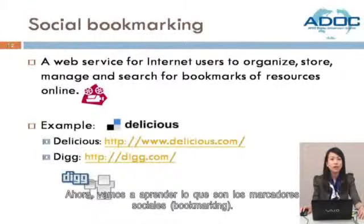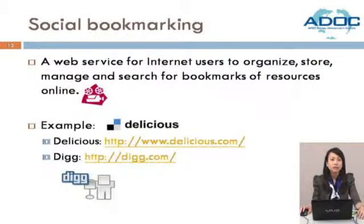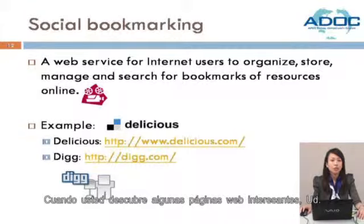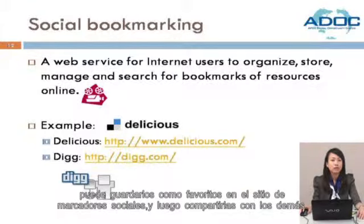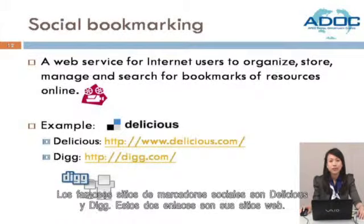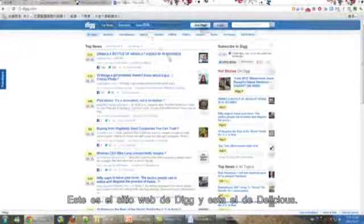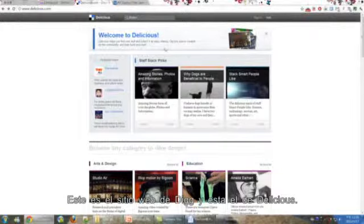Now, let's learn what social bookmarking is. Social bookmarking is a method for internet users to organize, store, manage, and search for bookmarks of resources online. When you find some interesting web pages, you can set them as bookmarks on a social bookmarking site and then share them with others. The famous social bookmarking sites are Delicious and Digg. This is the Digg website, and this is Delicious.